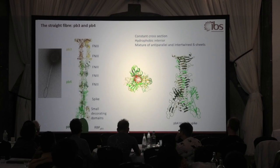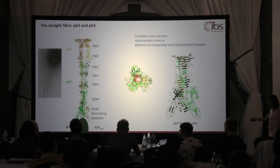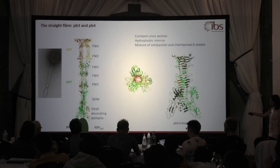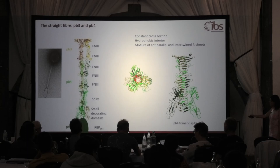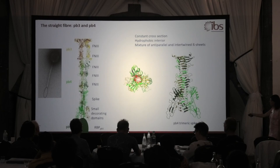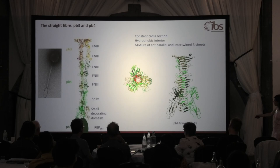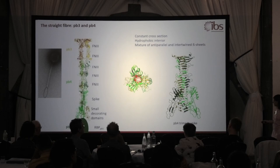How does the tail then proceed? The straight fiber continues with PB4. It's a trimer. You see there are no interactions between those fiber-folding domains in the base. Then there are three fiber-folding domains in the trimer of PB4, giving nine fiber-folding domains total that are really strongly connected. The polypeptide then goes into a spike, which is a mixture of beta-sheet and intertwined beta-helix spike, as often seen in spikes or fibers of phages. There are also small decorating domains. Unfortunately, we couldn't solve the structure of PB5 — it was too flexible.